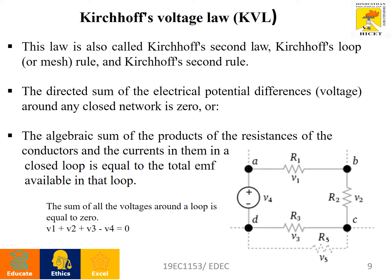Kirchhoff's Voltage Law (KVL) is also called Kirchhoff's Second Law or Kirchhoff's Loop/Mesh Rule. The directed sum of electrical potential differences around any closed network is zero. Equivalently, the algebraic sum of voltages around any closed path equals zero. Simply stated: V⁺ = V⁻.